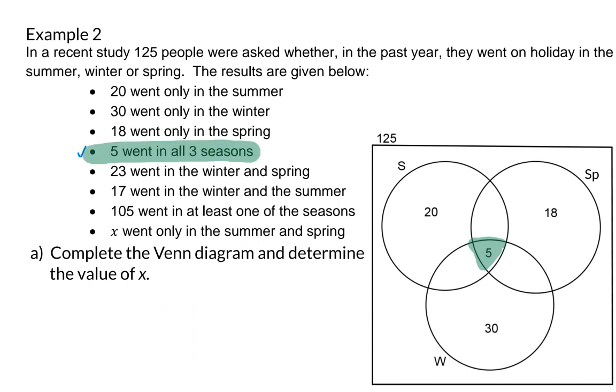The number of people that went only in one of the seasons has already been indicated. So here, I'm simply reminding you to look out for the word only. We were given that 20 went only in the summer, and that means you can immediately fill it in like that. If the word only was not there, we would have subtracted all the overlapping parts.